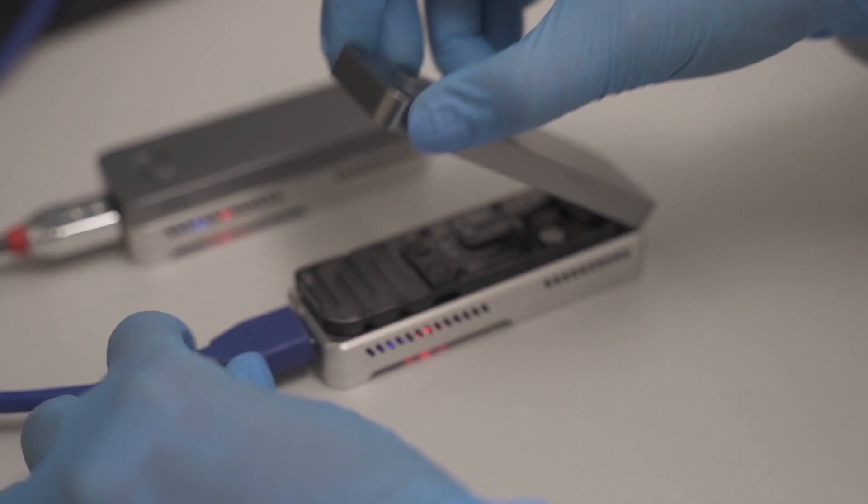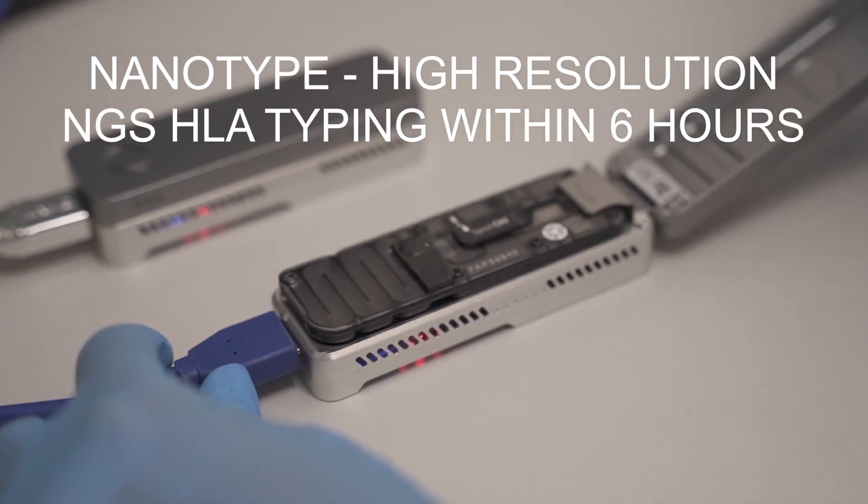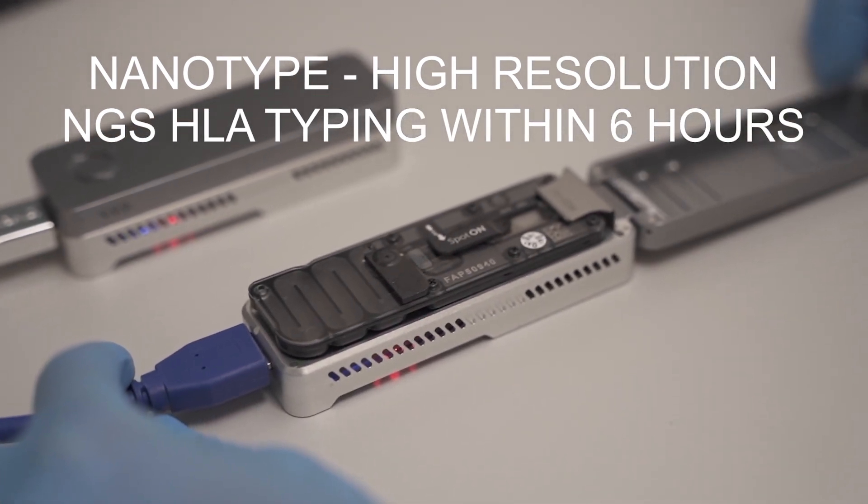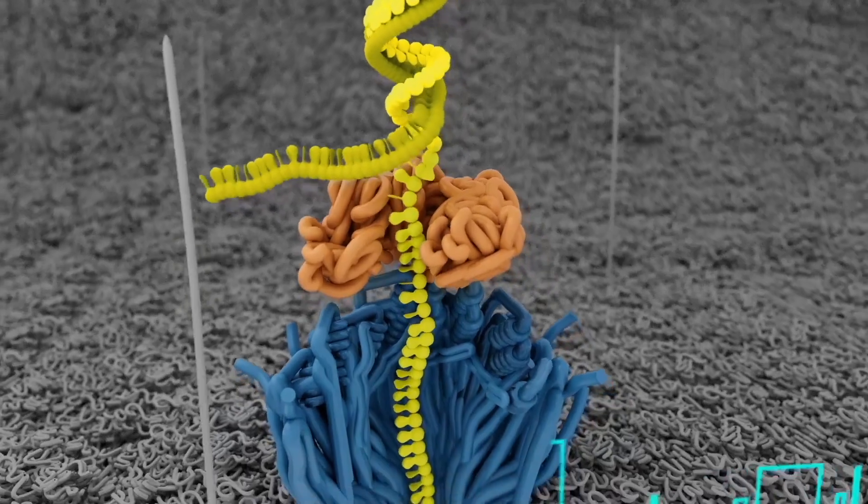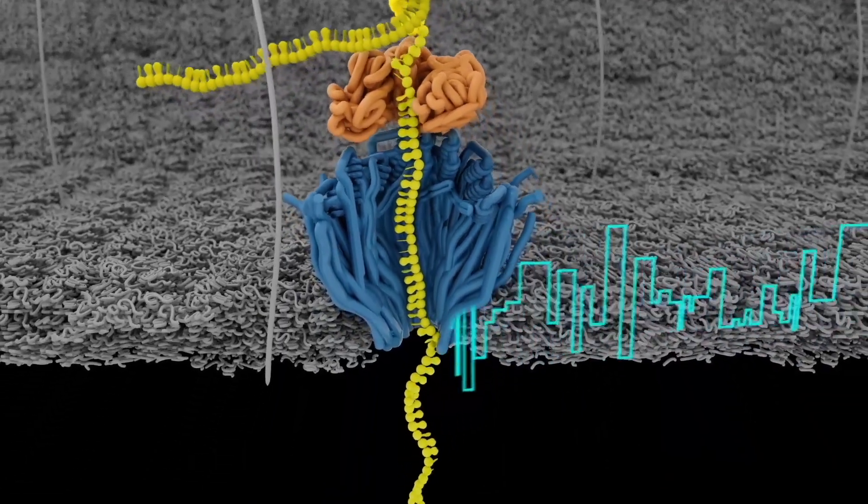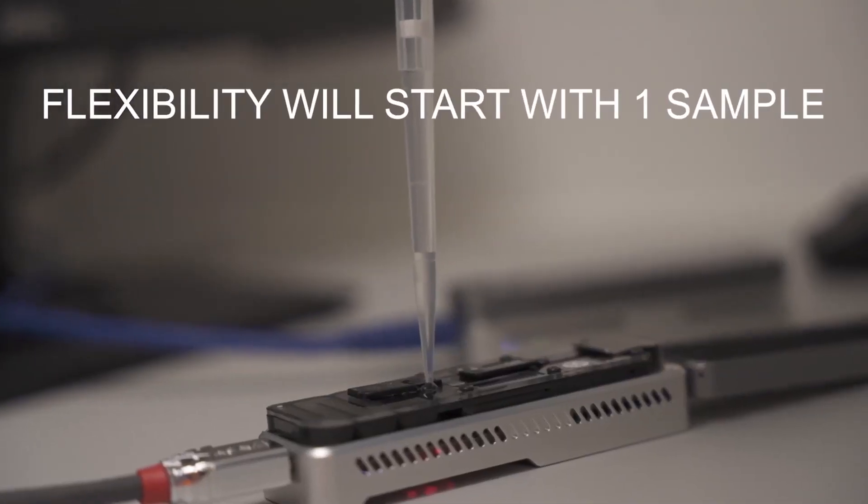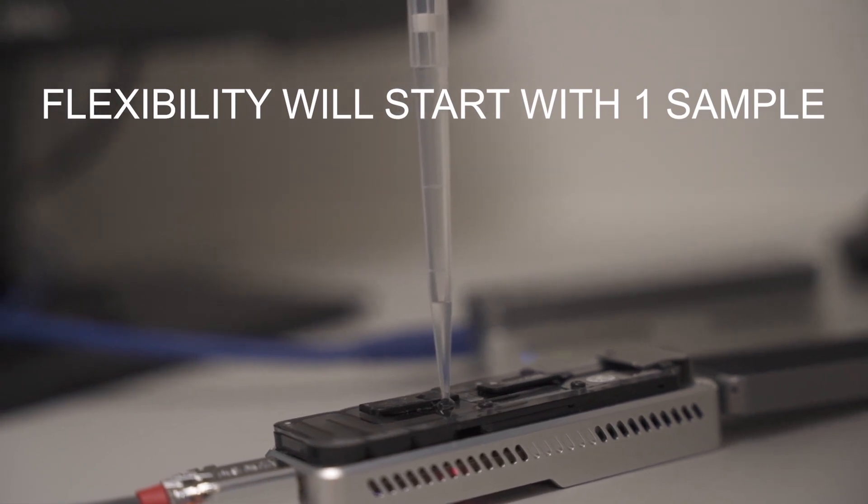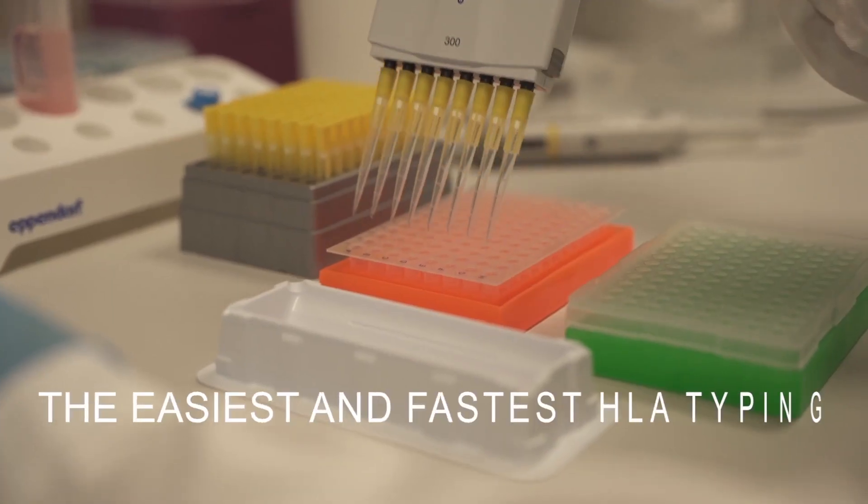Omixon has developed NanoType, the first high-resolution HLA typing method that can be completed in under six hours. Due to the sequencing of larger fragments of DNA, NanoType enables phasing of long-distance polymorphism resulting in unambiguous high-resolution HLA typing.